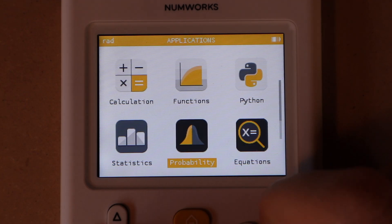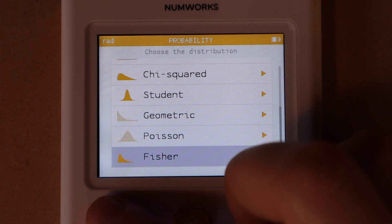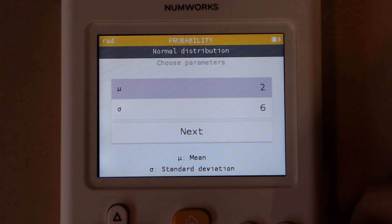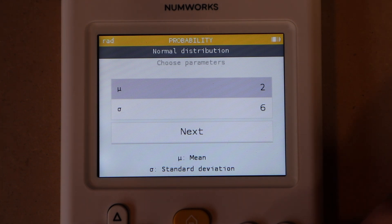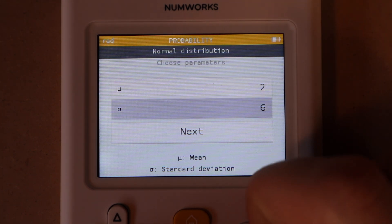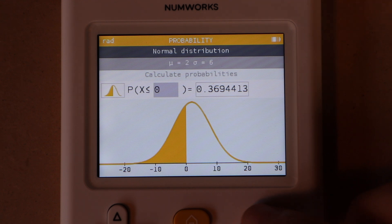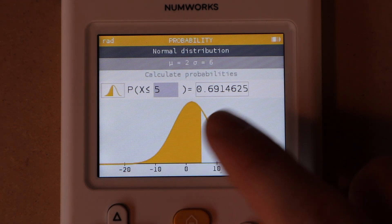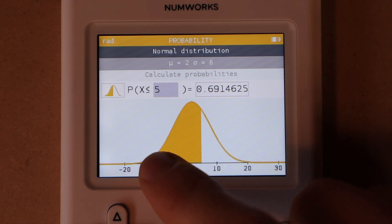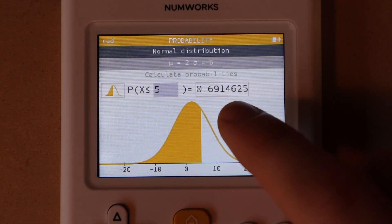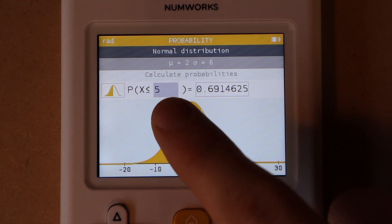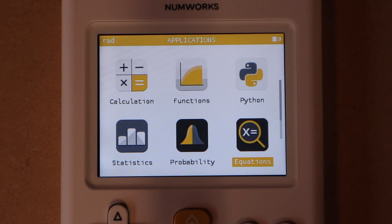Next is the probability app. Here you can choose from a list of distributions and then enter your variables like mean and standard deviation. I've just entered these random ones here, and then it will give you a nice plot. Then you can enter values here and it will give you a visual representation and a numeric probability for the value that you've entered for x to be less than or equal to.